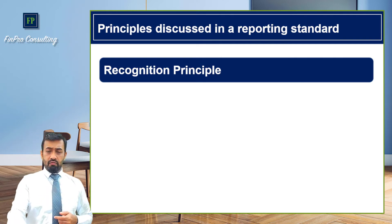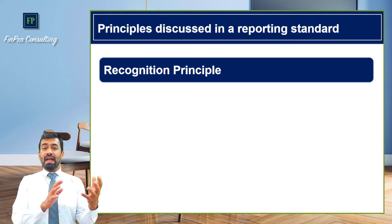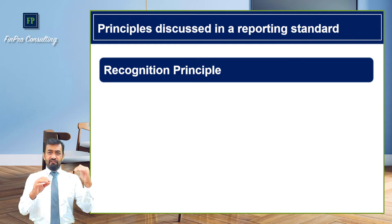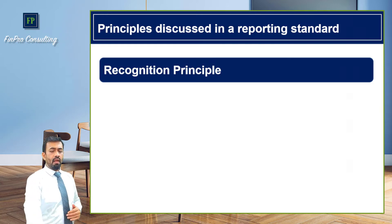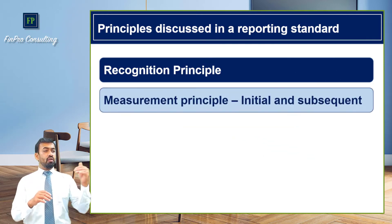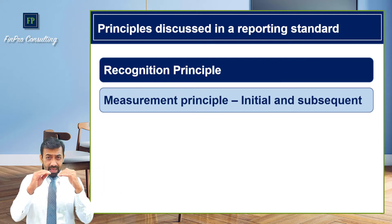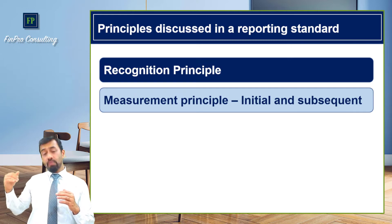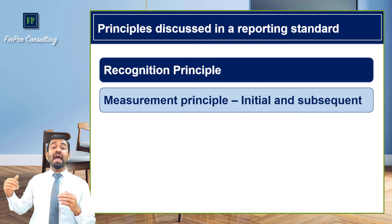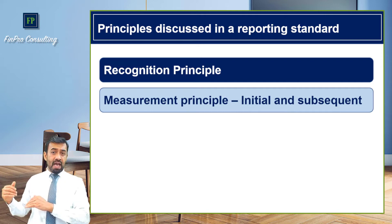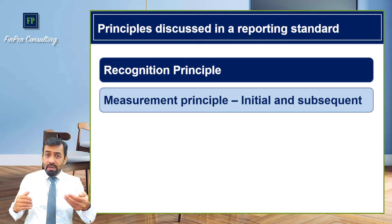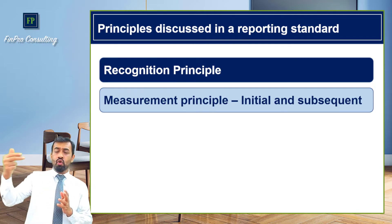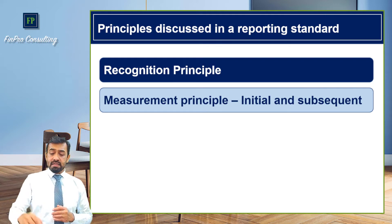The first principle is the recognition principle — the foremost principle — which tells us when to recognize, when to account for any transaction in the financial statement. Once we have decided to record a transaction, at what amount should it be measured initially? And then, on a subsequent reporting date, how will it be carried forward and at what amount? This is the second principle: the measurement principle, subdivided into initial measurement and subsequent measurement.